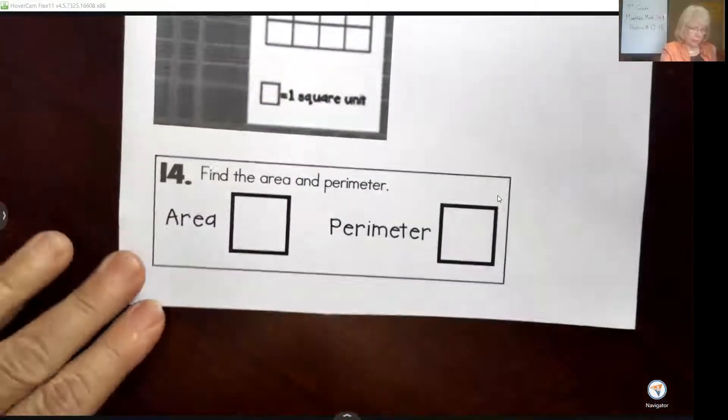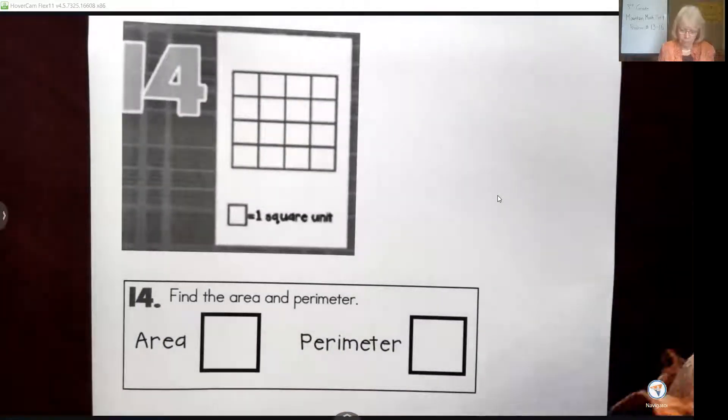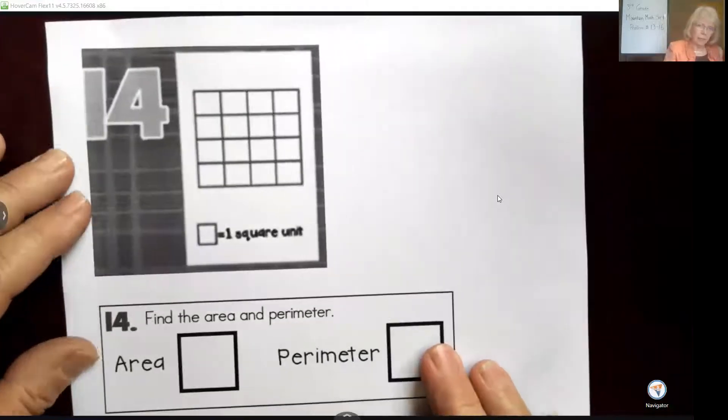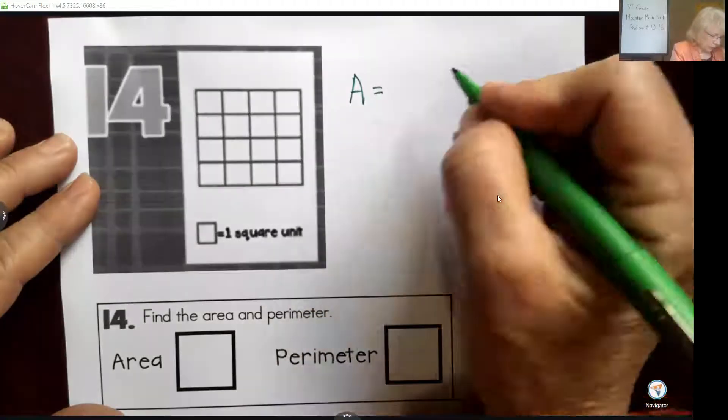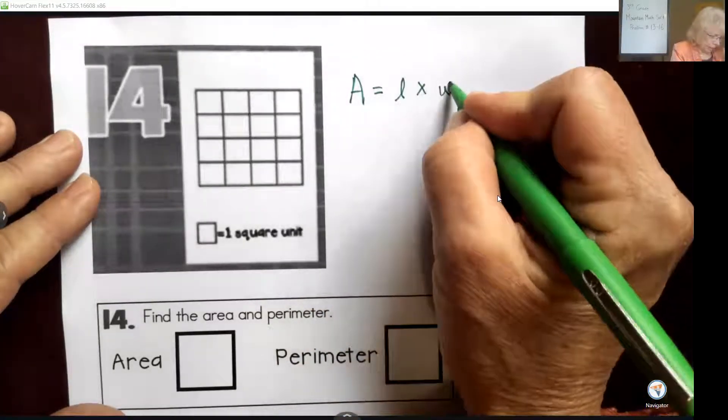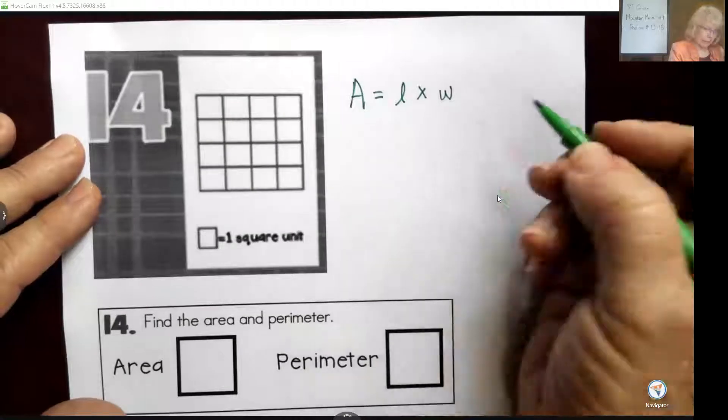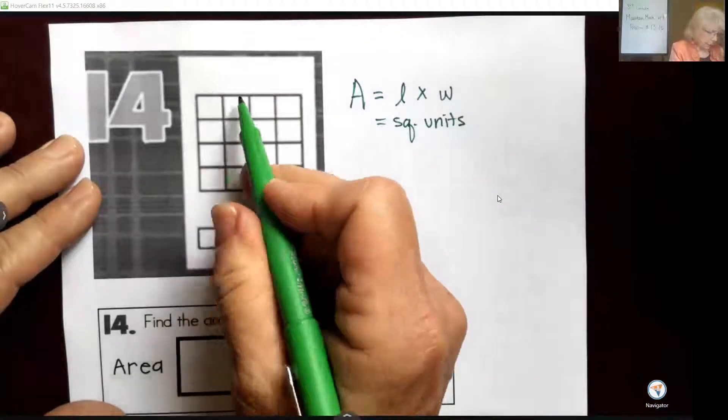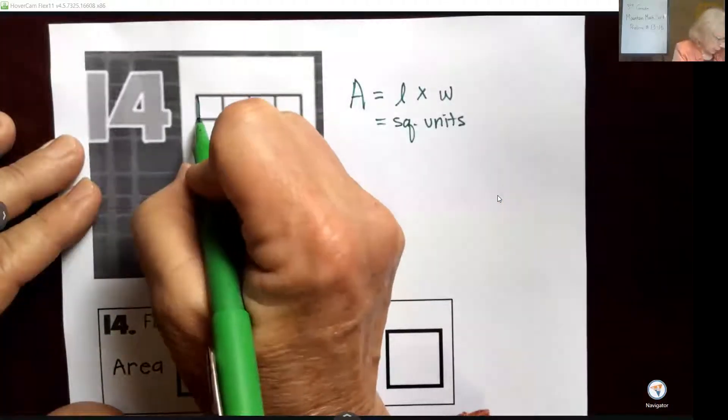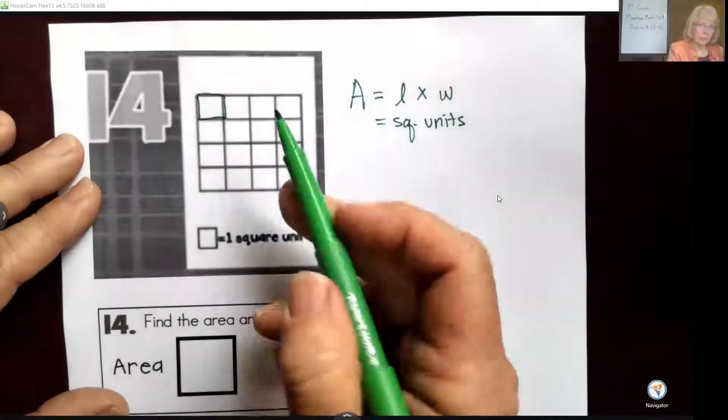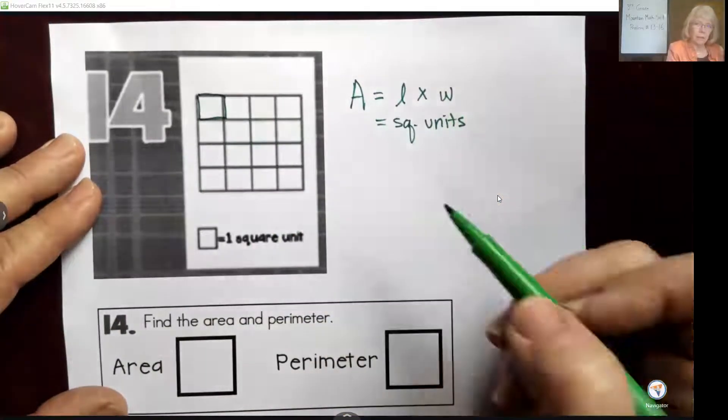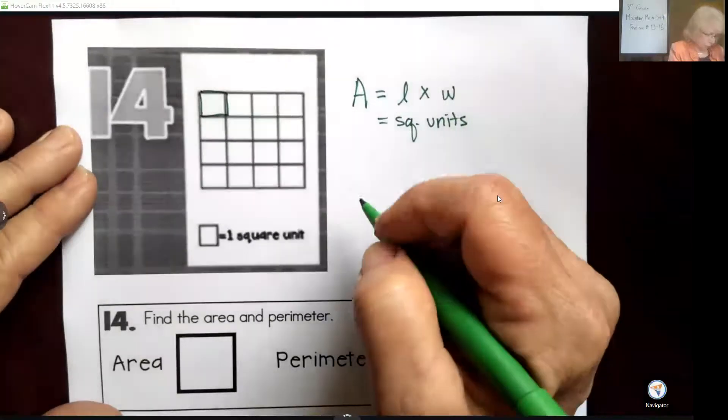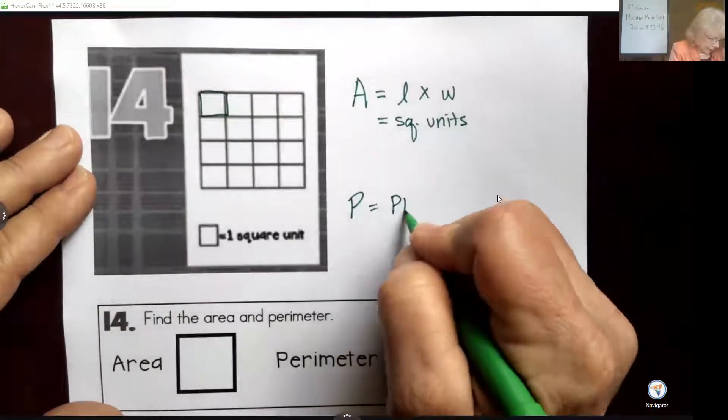Number 14 is our area and perimeter problem. Doesn't look too difficult today. They give us a shape here. Let's remember that area equals length times width and is measured in square units. When they show us the square units, this is one square unit. You could just count them or use our equation to solve it. And then perimeter is plus the sides.